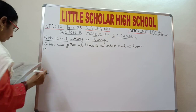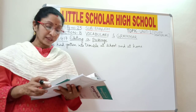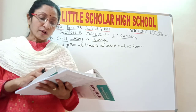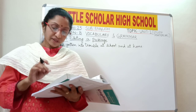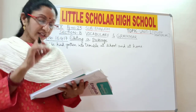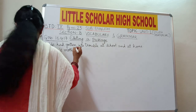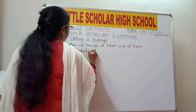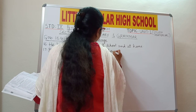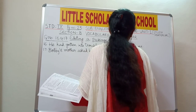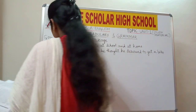Question number 17: 'Bobby's mother asked him he thought he deserved to get a bike for his birthday.' Something is missing. Bobby's mother asked him if he thought he deserved to get a bike for his birthday. The word 'if' is missing — insert 'if' here.